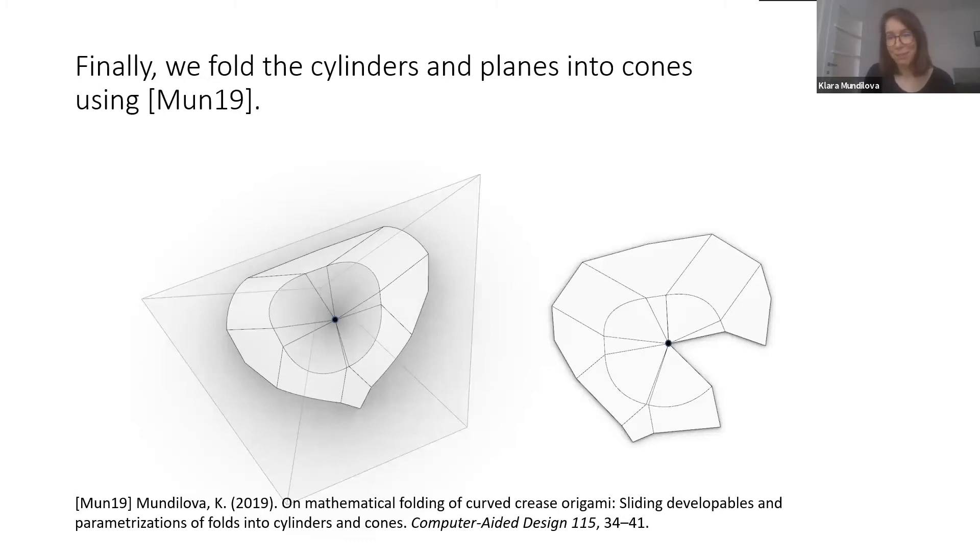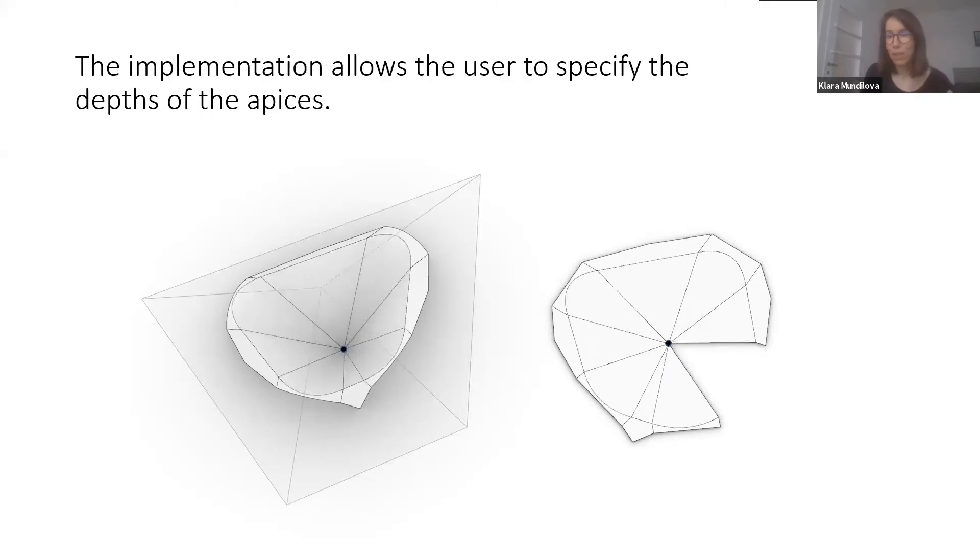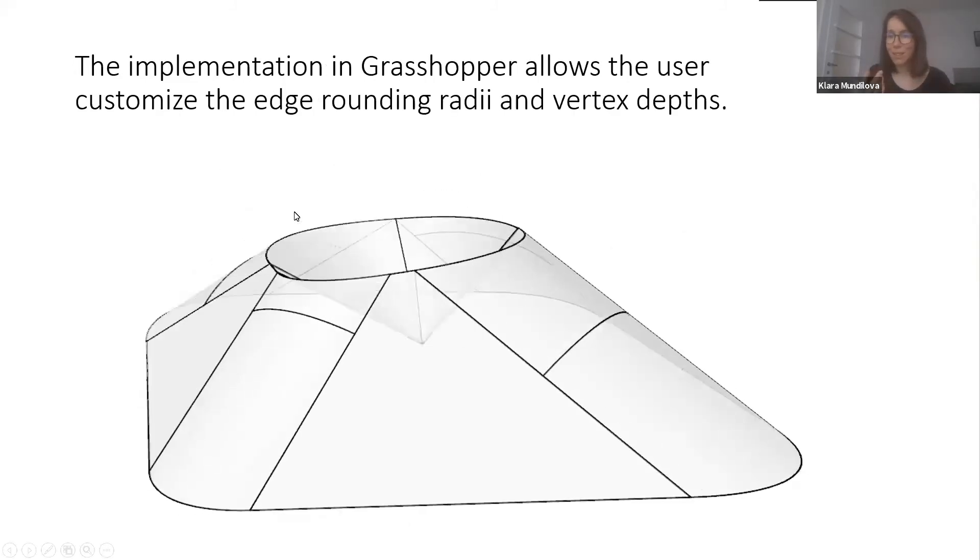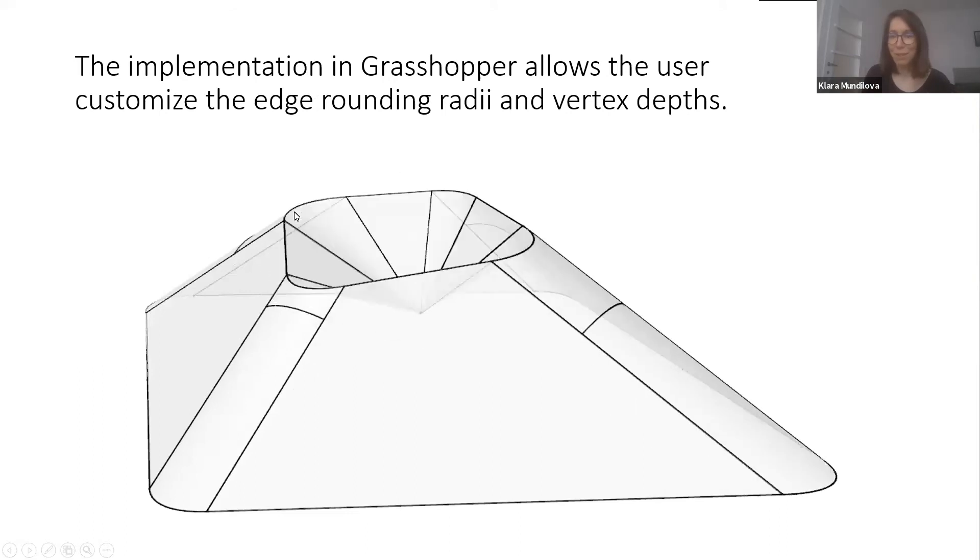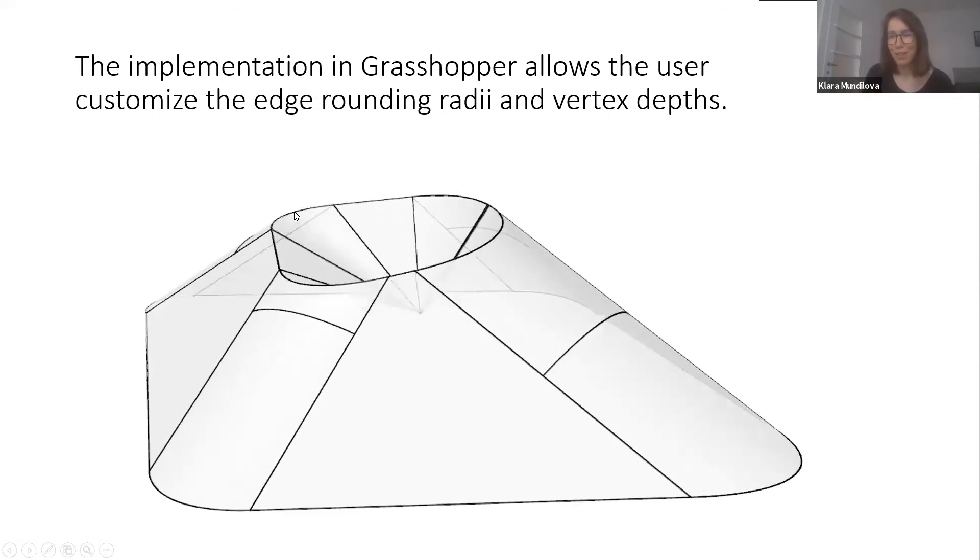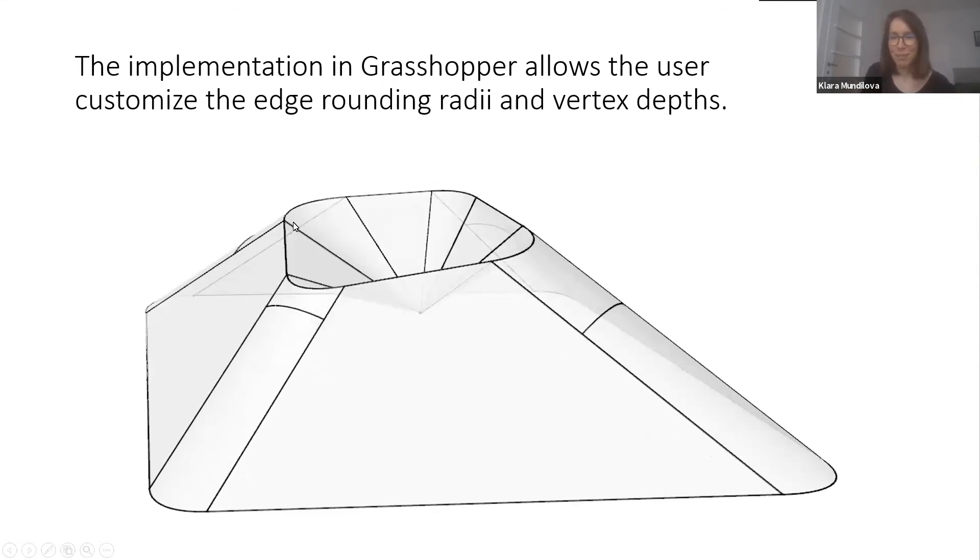We fold into cones and planes with this specified apex position around each of the vertices. There is a little bit of design freedom, so the user can still specify the extent to which the vertex goes inside this polyhedron. This results in a framework with many choices for design.